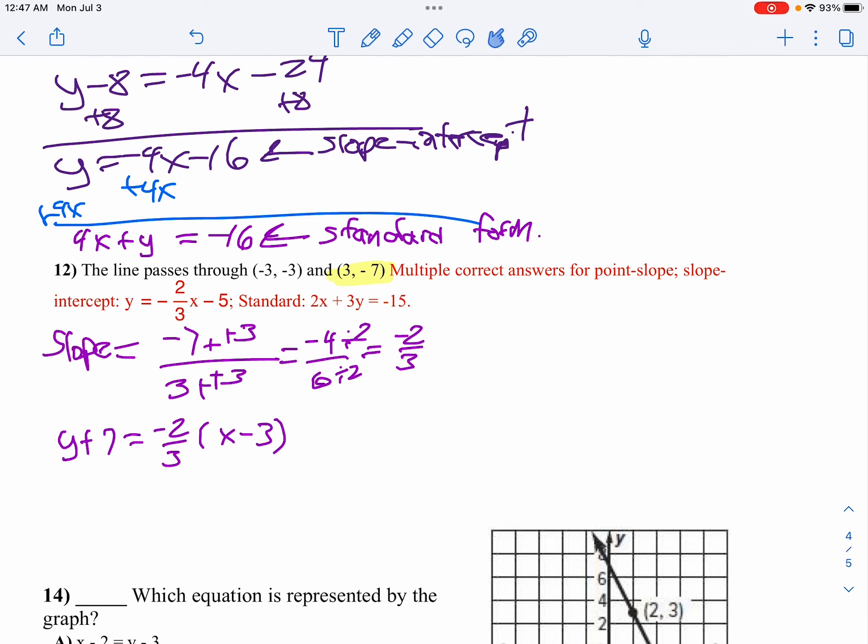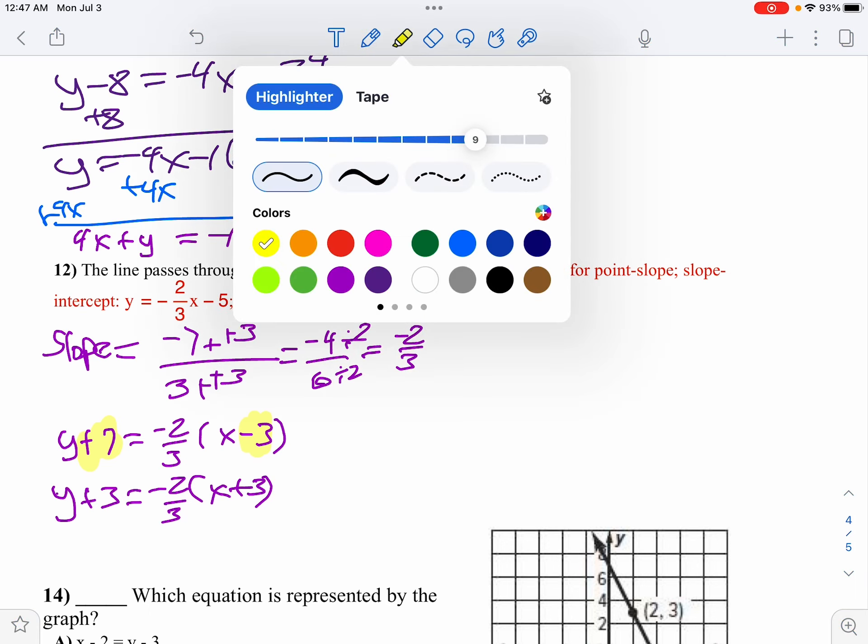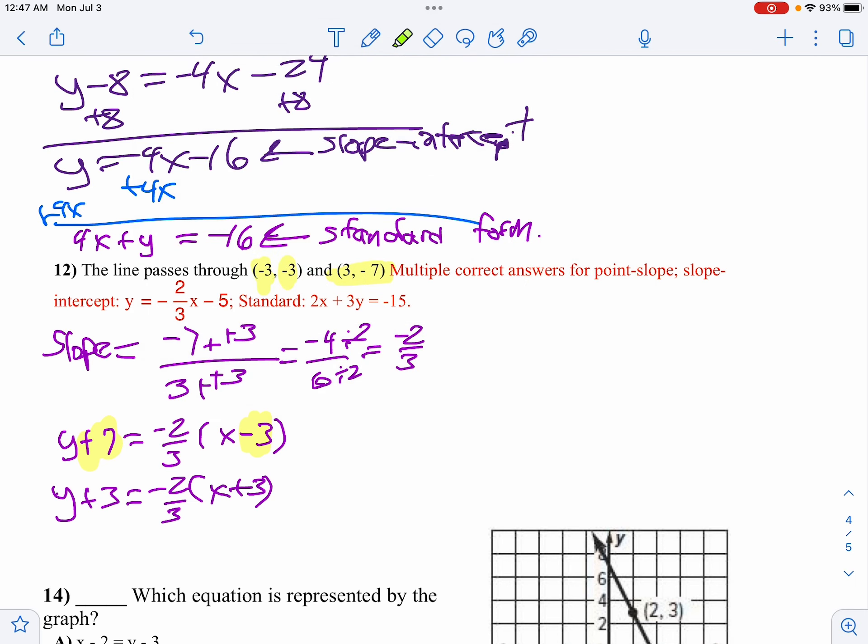So I'm going to say y plus 7 equals negative 2 thirds times x minus 3. I could have, instead of writing positive 7, I could have written negative 3. Instead of writing negative 3, I could have written positive 3, because I'd have to subtract a negative there. So let's, I'm going to write that down for you too. So we could say y plus 3 would be negative 2 thirds times x plus 3. You don't need both of these, but you need one of them.